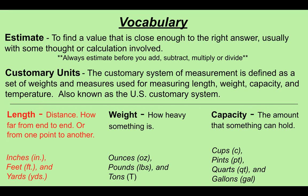To measure length, we use inches, feet, and yards. Another customary unit we will be studying is weight — how heavy something is — and for that we measure in ounces, pounds, and tons. The last customary unit we will learn about is capacity — the amount that something can hold — and for that we measure with cups, pints, quarts, and gallons.